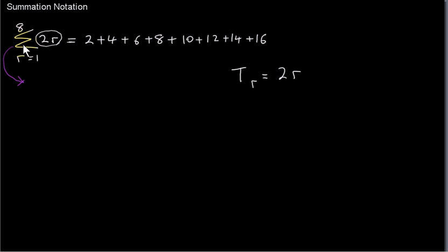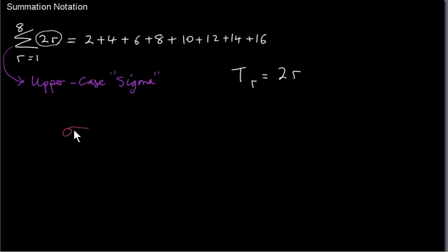This symbol that looks like an E is the Greek letter Sigma — specifically an uppercase or capital Sigma. The lowercase Sigma looks different and is used to stand for the standard deviation of a population in statistics. We won't be using it that way here. Here we have Sigma from r equals 1 to 8 of 2r.